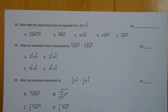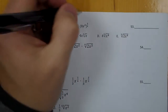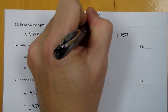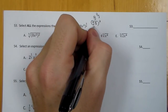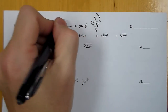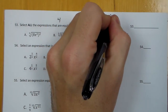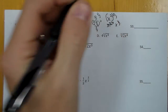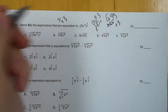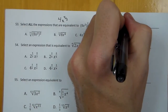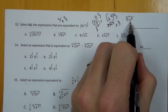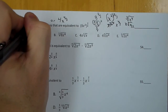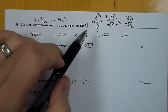For 53, we need to select all expressions equivalent to the given one. I'll simplify first: 8 to the two-thirds is the cube root of 8 squared. The cube root of 8 is 2, and 2 squared is 4. So I can rewrite this as 4. Then x squared to the two-thirds — I multiply the exponents — and that becomes x to the four-thirds. Or in radical form, that's the cube root of x to the 4th. By simplifying, I can take out three of those x's, giving x times the cube root of x.